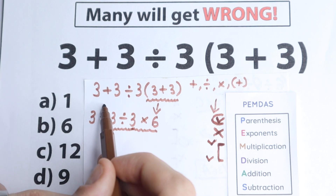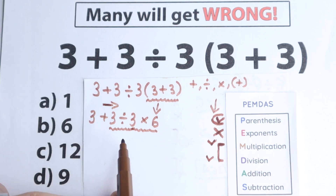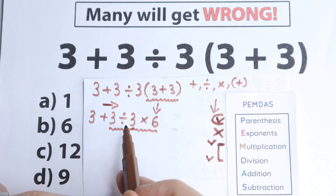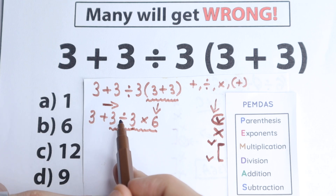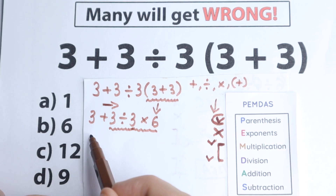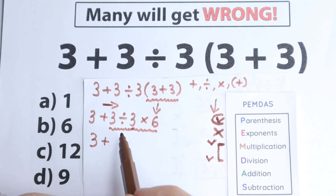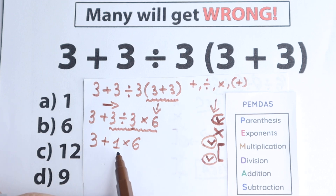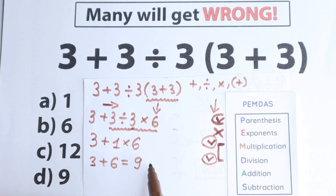According to PEMDAS we solve left to right. The first sign from left to right is division. So: 3 divided by 3 equals 1, giving us 3 plus 1 times 6. Then we multiply: 1 times 6 equals 6. So we have 3 plus 6, which equals 9 — that is option D. We completed the multiplication part, and now of course we have the addition part.